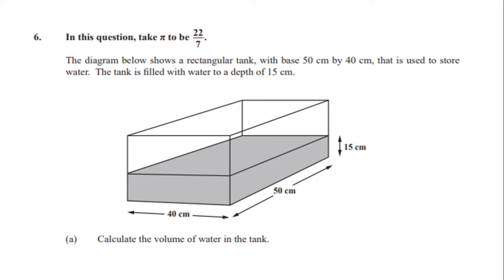Part A says: calculate the volume of water in the tank. The volume for a rectangular shaped object is volume equals length times width times height. So the volume is 50 cm times 40 cm times 15 cm, which gives a volume of 30,000 cm³. That is our answer for the volume of water currently in the tank.